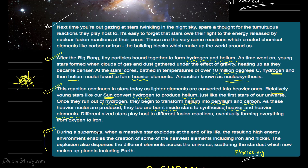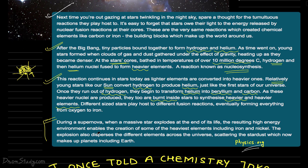And when a supernova happens — a supernova is when a massive star explodes at the end of its life — a lot of energy is released, and from that high energy even heavier elements are formed, like iron and nickel. And all of these elements scatter in the form of stardust throughout the entire universe. So basically this entire universe is made from stardust — even earth and all other planets.